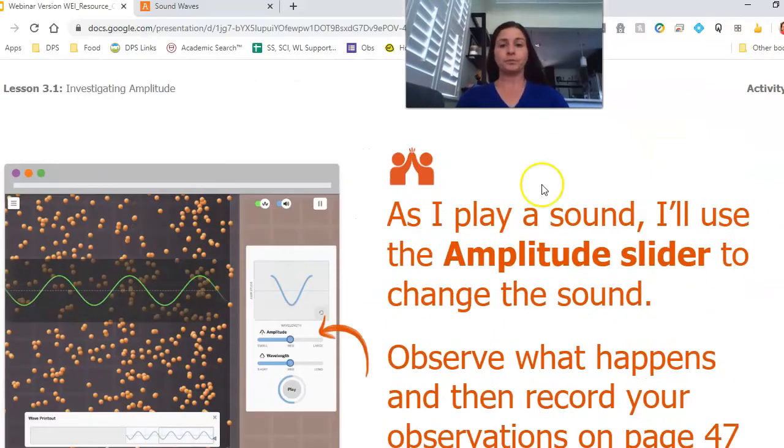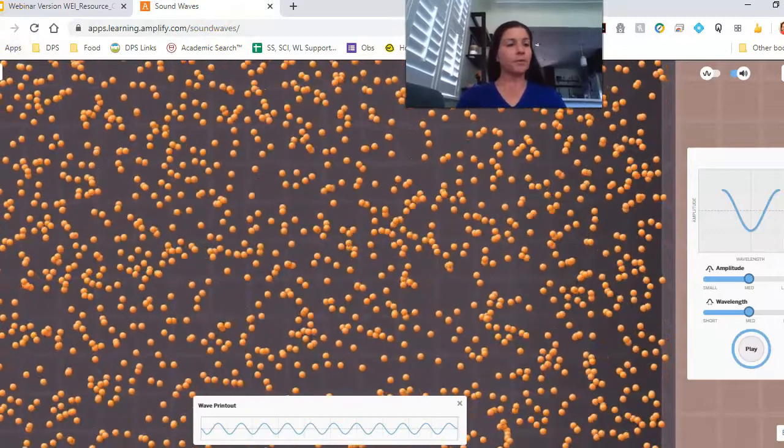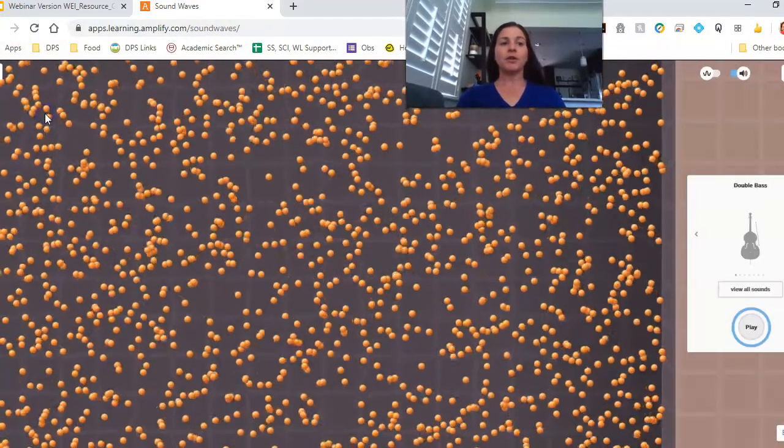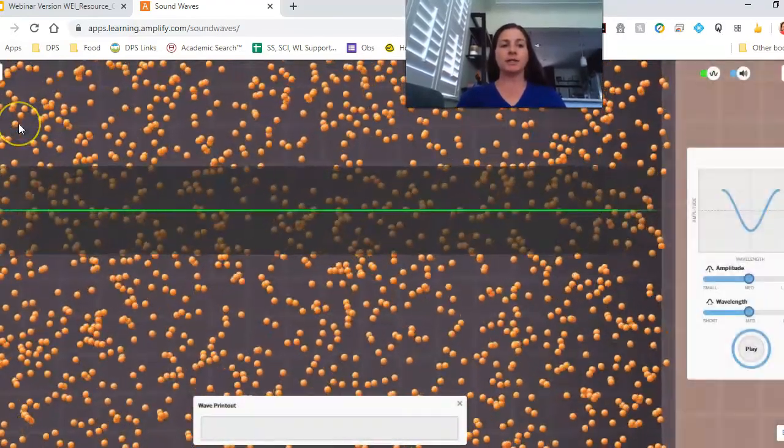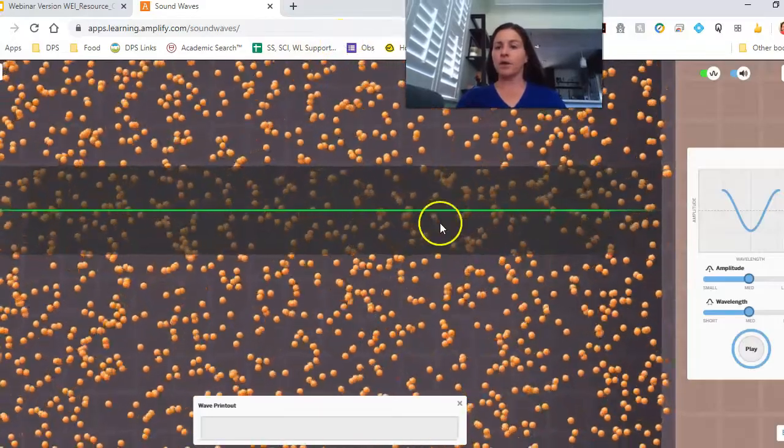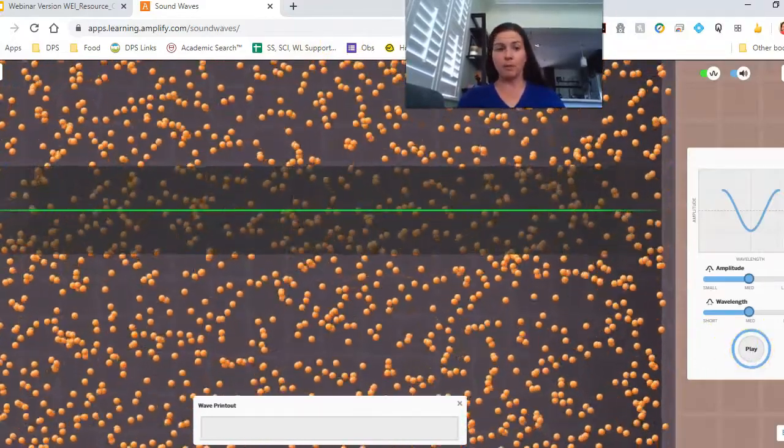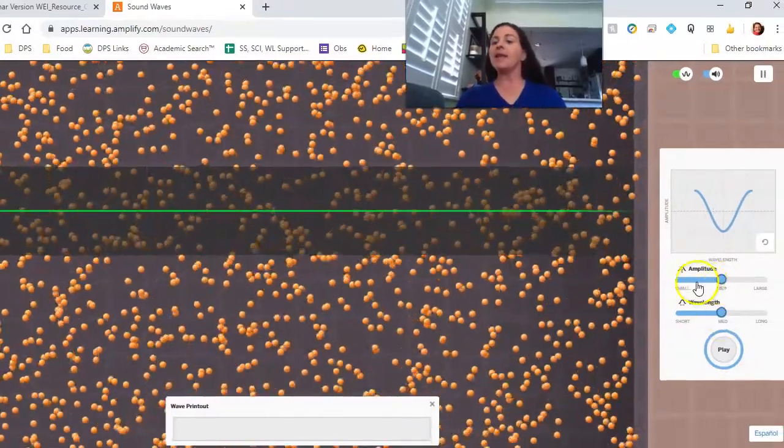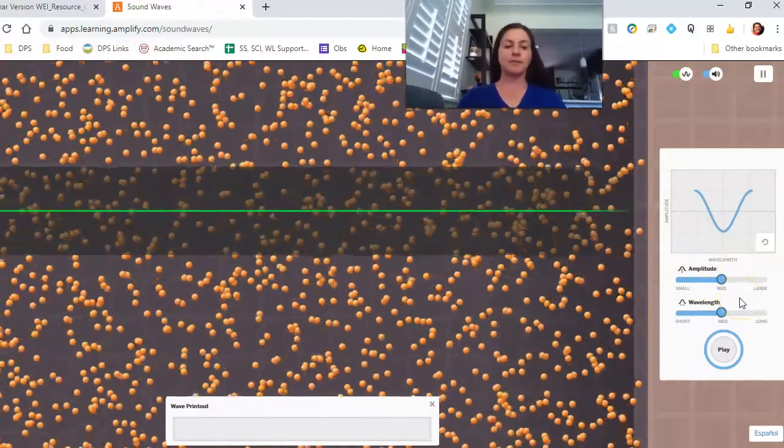So let me go to the sound simulation. And I know I'm in custom sound. So if you're in here on your own, sometimes it opens in instruments. Make sure that you go to custom sound. All right. So I am going to press play in just a moment. I'm going to move this over a little bit so we can see the whole thing. And then I'm going to mess around with the amplitude a little bit, and we're going to see what happens. All right, let's give it a shot.